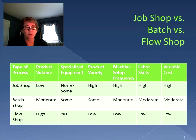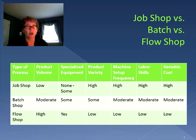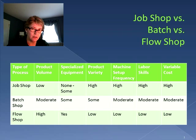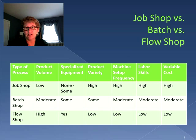The batch shop falls between the two — we can make some product, we use some specialized equipment, and we allow for a little variety. So depending on what kind of product we're trying to design and what process competencies we're trying to achieve, we have to match the architecture to it.